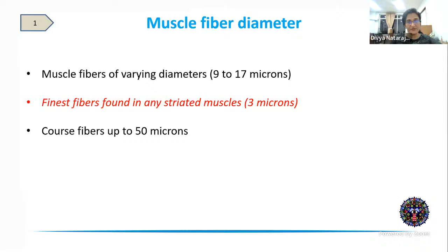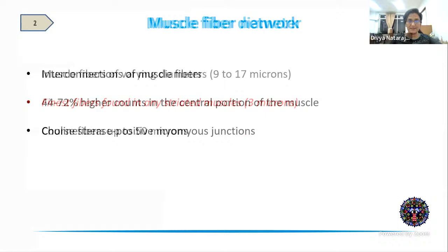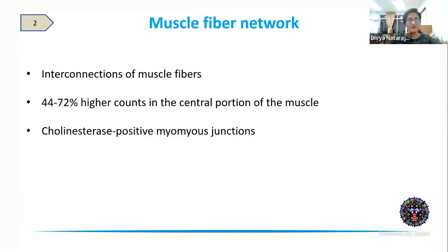First, muscle fibers of the eye have varying diameters — classically reported as 9 to 17 microns, but ranging from about 3 microns in some areas up to 50 microns. By contrast, other striated muscle fibers are around 90 to 100 microns. So EOM fibers are generally finer but of quite varying diameters. Second, they have very good interconnection of muscle fibers via myomyous junctions.